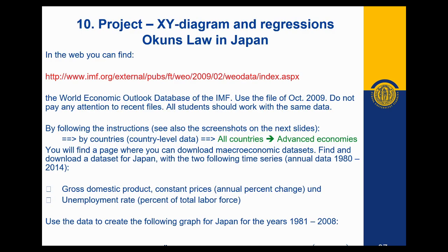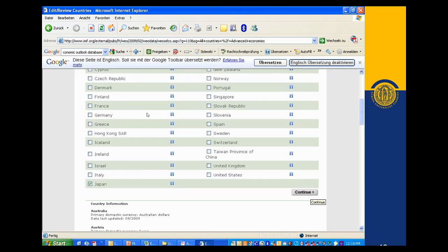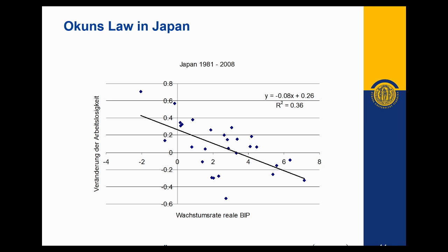Let's start with Project 10, which is about Okun's Law. We'll use data from the World Economic Outlook database from the International Monetary Fund for Japan. To do Okun's Law we'll need the gross domestic product and the unemployment rate of Japan. What Okun's Law says is that there is a linear relationship between the growth rate of the gross domestic product and the change of the unemployment rate.